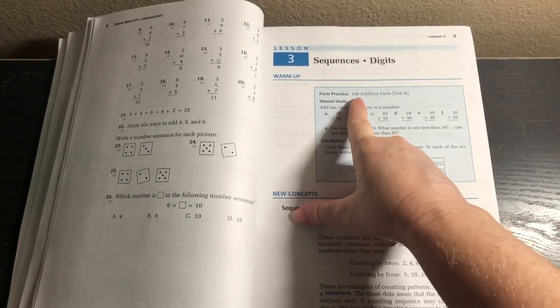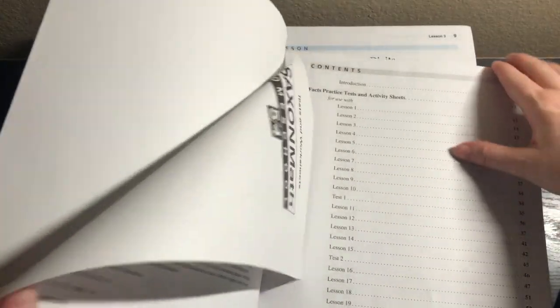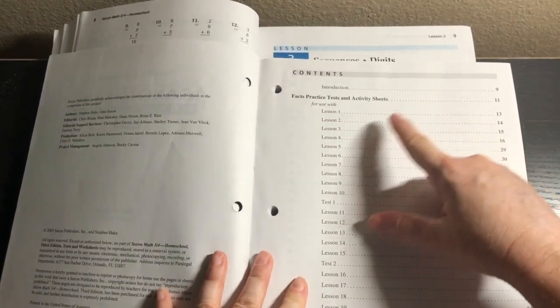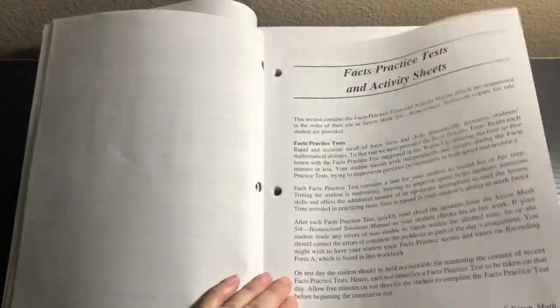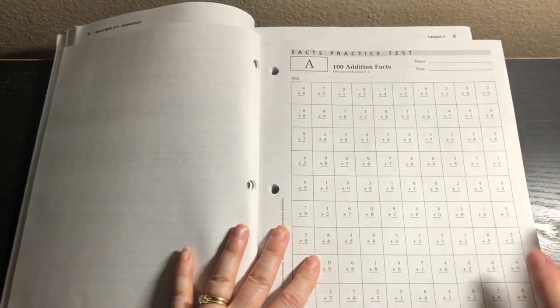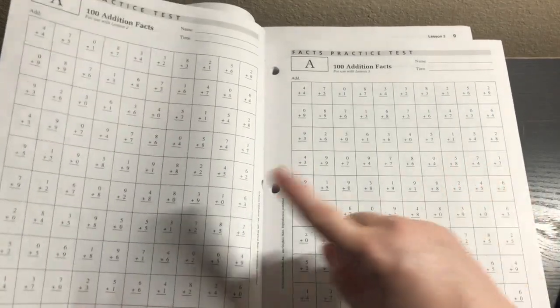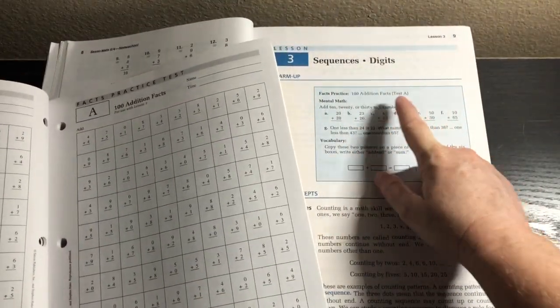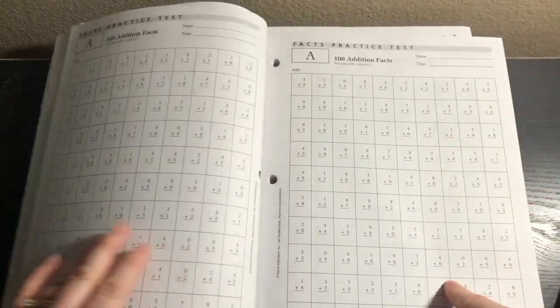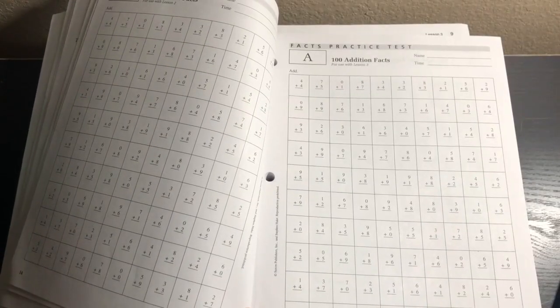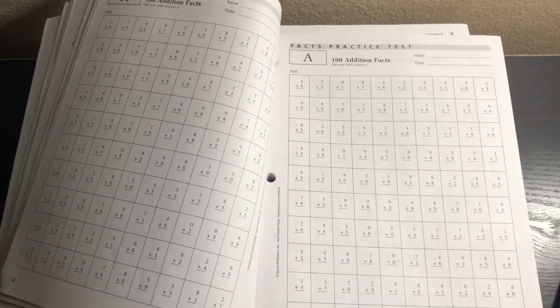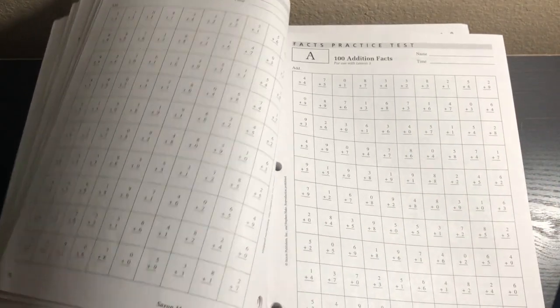The first thing it says is facts practice 100 addition facts test A. That is in here, in the tests and worksheets. You can see facts practice tests and activity sheets for use with lesson one, two, three, and so forth. Here is the facts practice for use with lesson one. I believe you set a timer for five minutes. So you would set a timer and they would have five minutes to do as much of this as they can. Obviously the goal is you want them to try to do them all in five minutes.